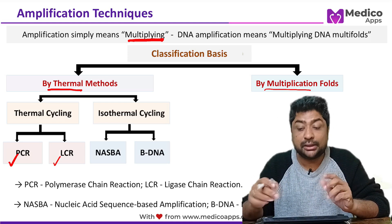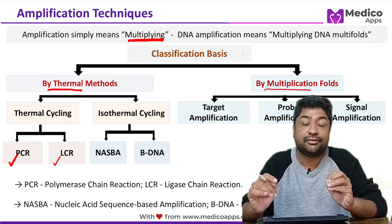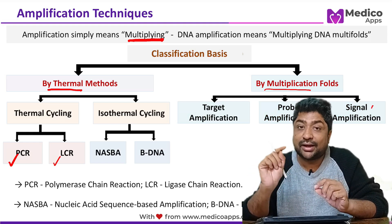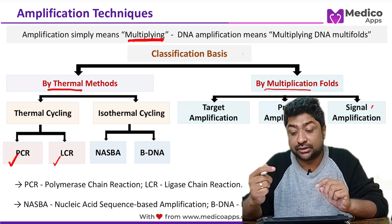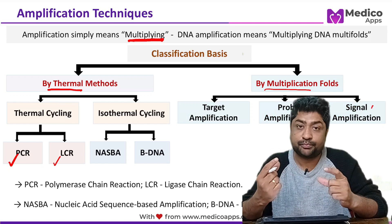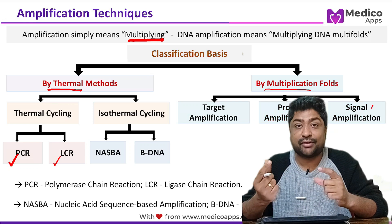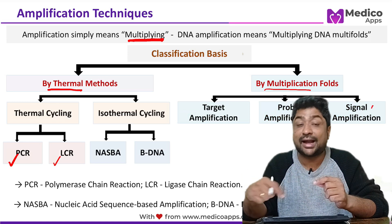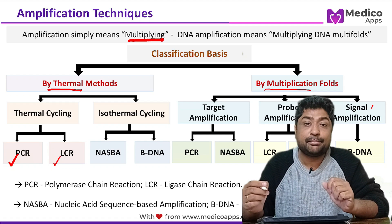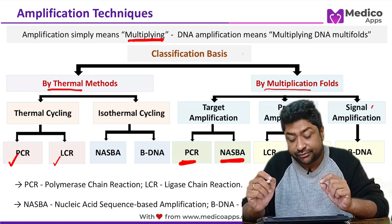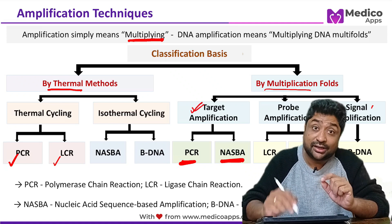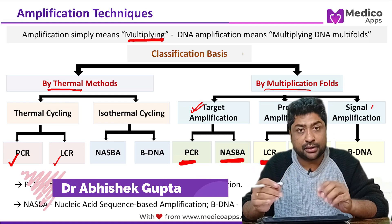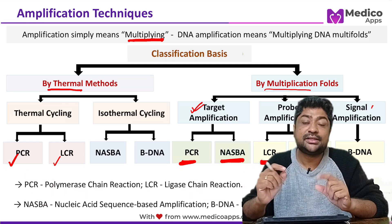When classified by what is being multiplied, we have target amplification, probe amplification, and signal amplification. In target amplification, the target DNA itself is amplified. In probe amplification, the probe or primer used to identify the target is amplified. In signal amplification, the signal generated by attachment of the probe to the target is amplified. PCR and NASBA are target amplification techniques; LCR and Qbeta replicase are probe amplification; and BDNA is a signal amplification technique.